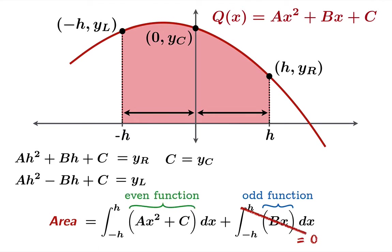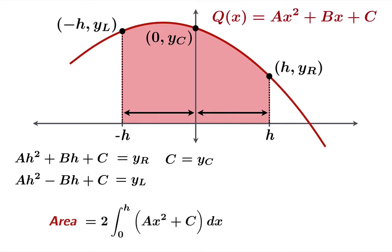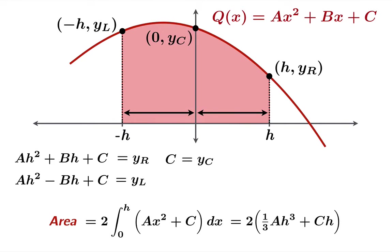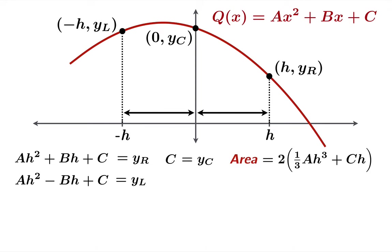Now we concentrate on the other integral. We notice that ax squared plus c is an even function that we're integrating from negative h to h, so we can simplify by integrating from 0 to h and doubling it. The area then turns out to be twice the integral of ax squared plus c from 0 to h. The fundamental theorem lets us find the antiderivative, plug in h and 0, and subtract. The area is twice the quantity one-third ah cubed plus ch.